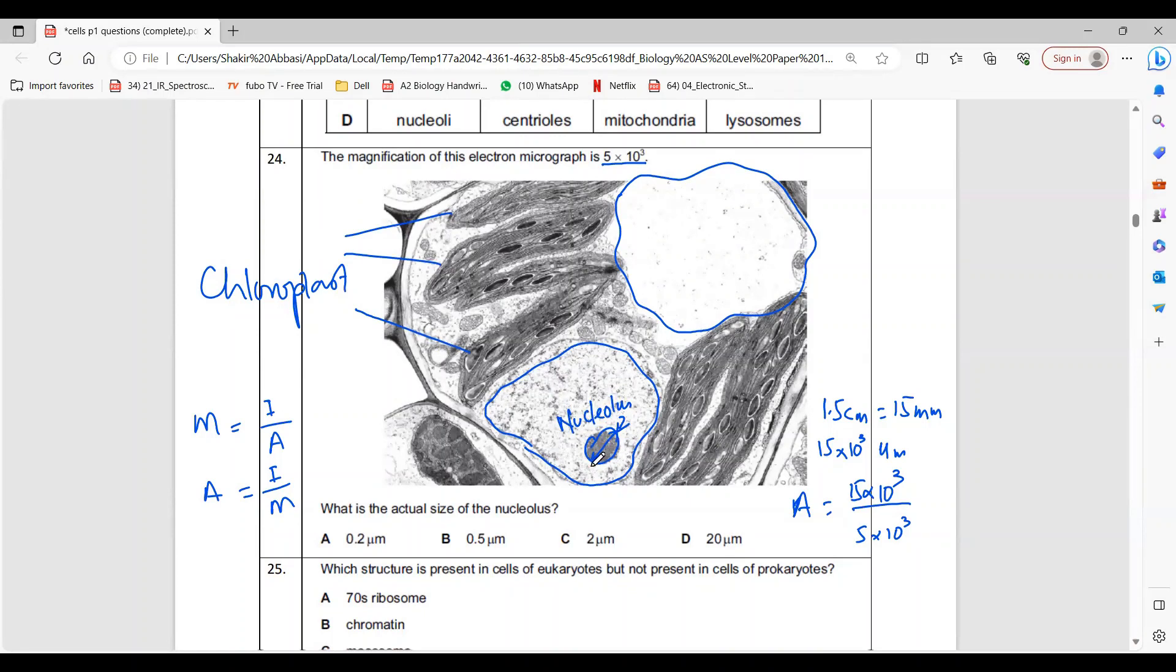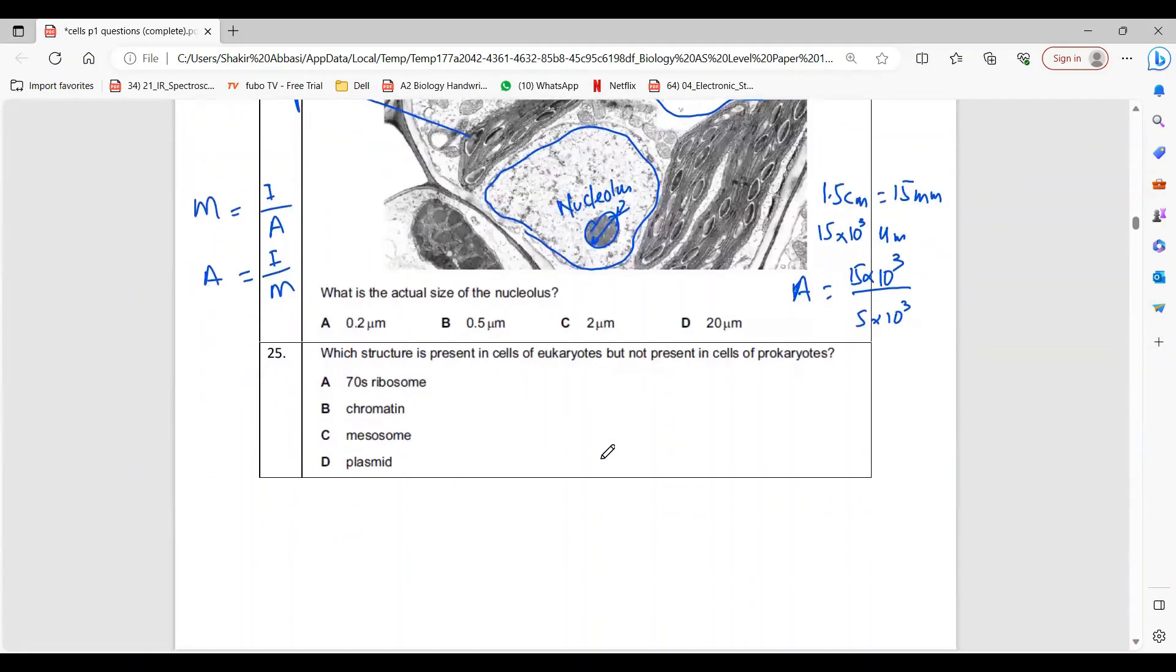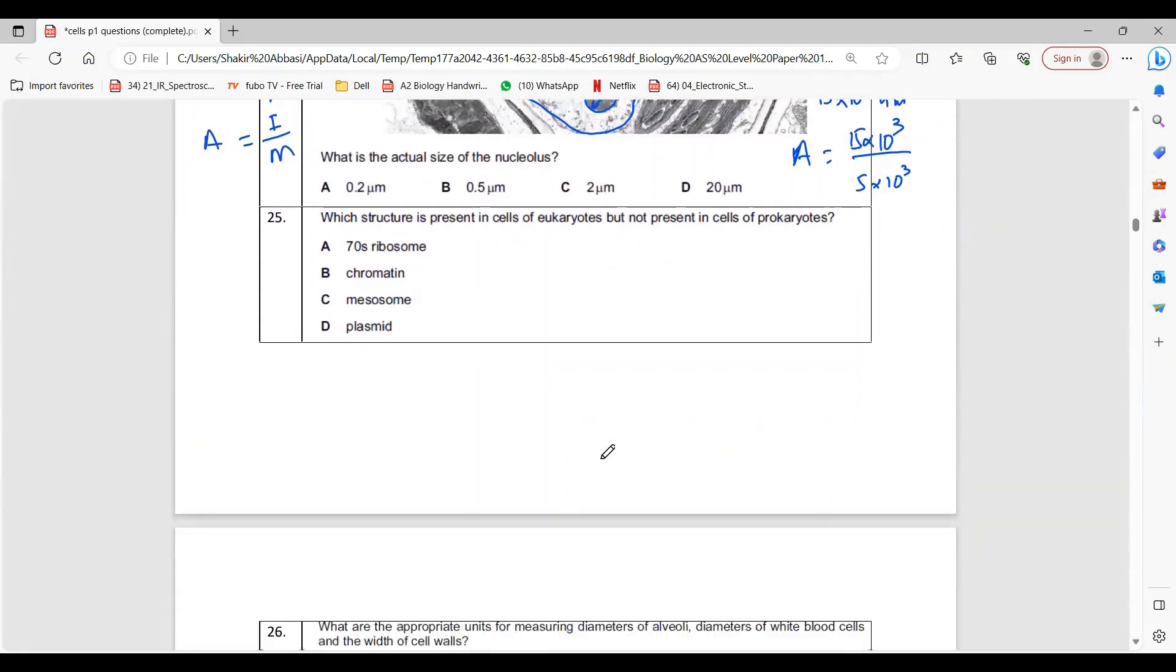Question 25 says which structures are present in eukaryotes but not in prokaryotes. That again is self-explanatory - it must be chromatin, because chromatin is when DNA is wrapped around histones, as we did in our class in detail. DNA is wrapped around histones only in eukaryotes.